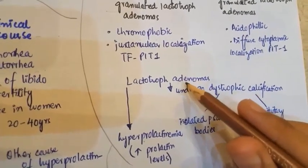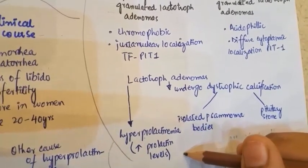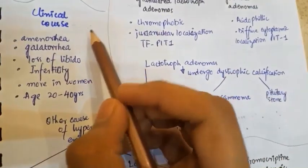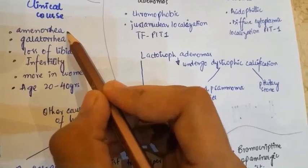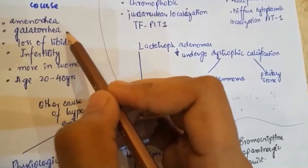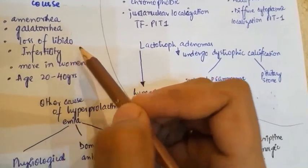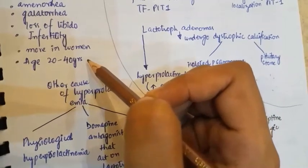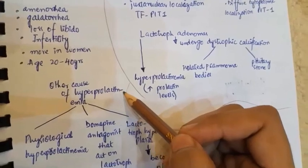Lactotroph adenomas produce hyperprolactinemia — increased prolactin levels. The clinical course includes amenorrhea in females, absence of the menstrual cycle, lactorrhea, loss of libido, and infertility. It is more common in humans aged 20 to 40 years.